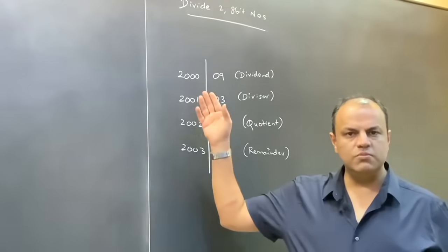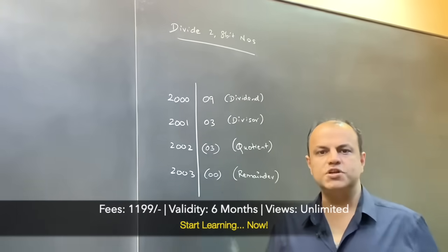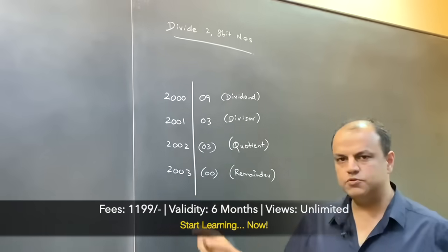Again, two numbers stored at 2000 and 2001. This is the dividend, this is the divisor. We're going to divide them. We will get a quotient and a remainder, which we store at 2002 and 2003.